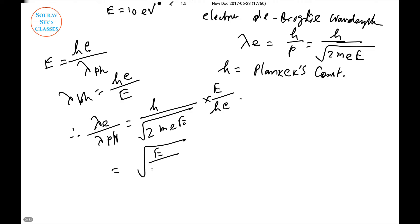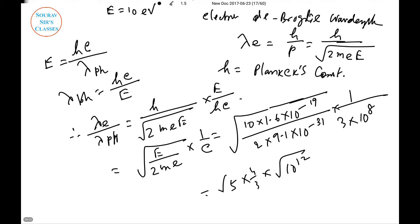This equals √(E/(2me)) × (1/c). Now putting the values: √[(10 × 1.6 × 10^-19)/(2 × 9.1 × 10^-31)] × 1/(3 × 10^8). This equals √(5/4) times 1/3 and some powers of 10.